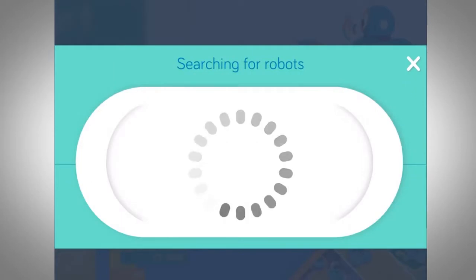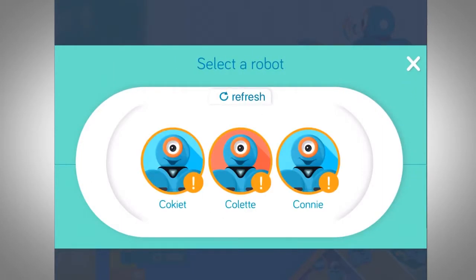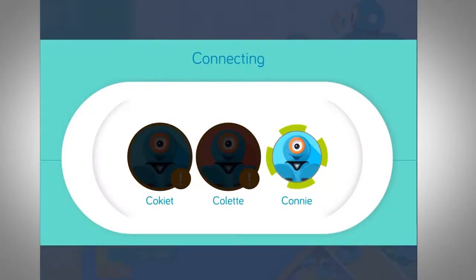All switched-on Dash robots are going to be listed, so if you have all 10 of them turned on you're going to see a lot. Connect to any Dash.